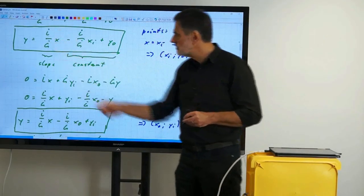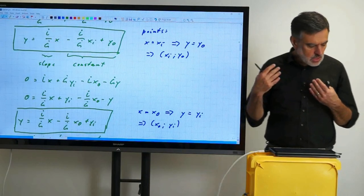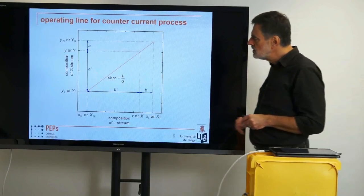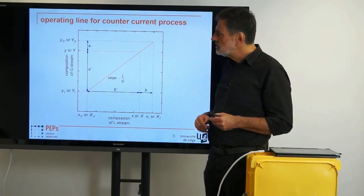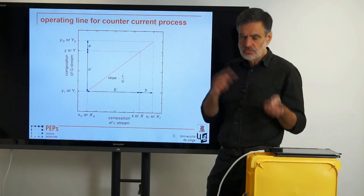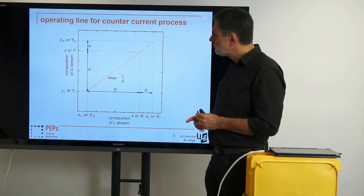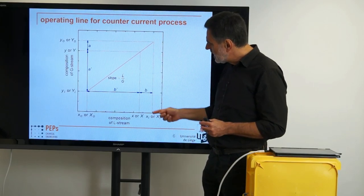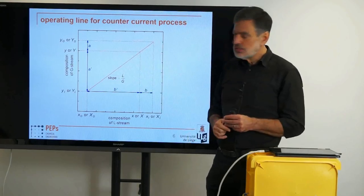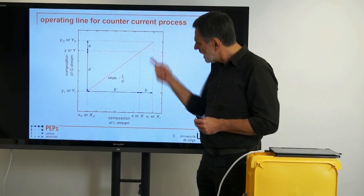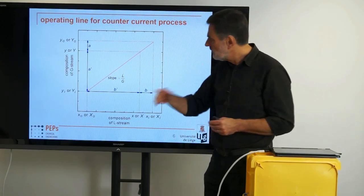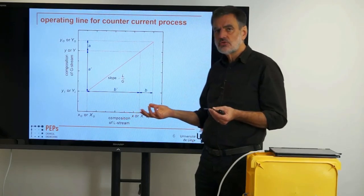We can now plot the Y-X diagram — expressed in mole loads, mole fractions, or mass fractions; it is always the same. We link the top point (Xi, Yo) and the bottom point (Xo, Yi) with the operating line, which has slope L-dot/G-dot and is a straight line. Any intermediate composition (X, Y) describing flow rates meeting somewhere within that equipment must lie on this straight line, as we discussed in the McCabe-Thiele diagram for distillation.